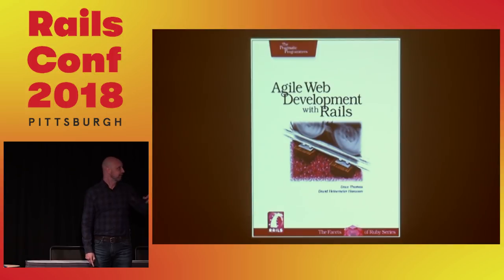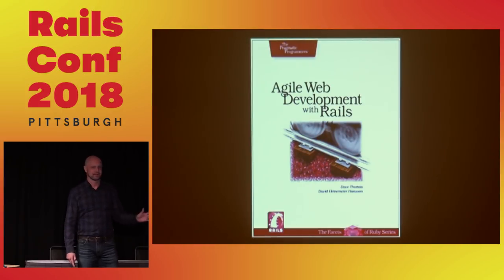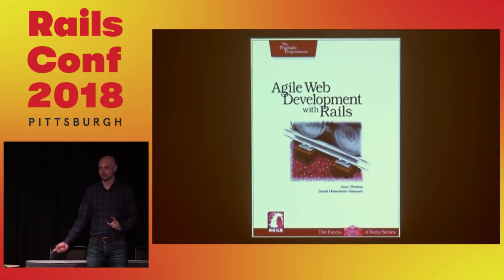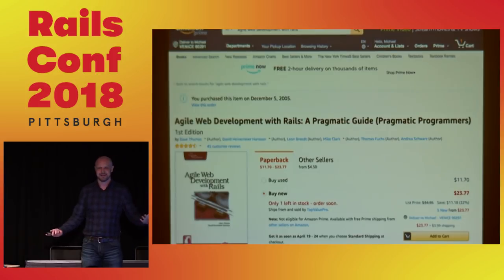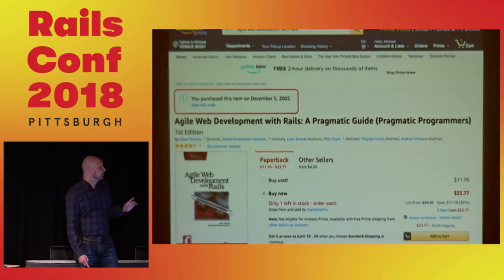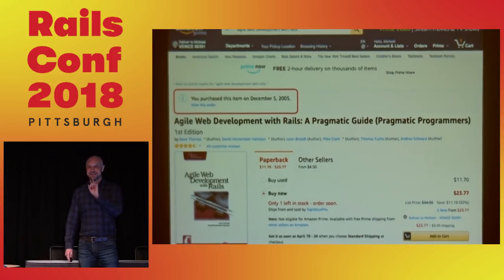In preparing this talk I needed a copy of that book, and I'd like to thank Dave Thomas for being gracious enough to send me a PDF copy. The PDF didn't have the cover, so I rolled into Amazon, where you can still buy a first edition — presumably as a collector's item. And there was something amazing and a little creepy: 'You purchased this item on December 5, 2005.' Amazon never forgets.